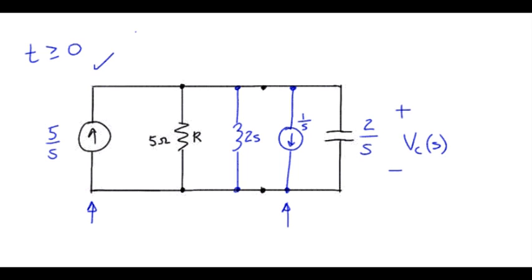Parallel sources add together, and if we account for the fact that the current source on this side has the opposite direction, then the combination will look like 5 over S minus 1 over S.